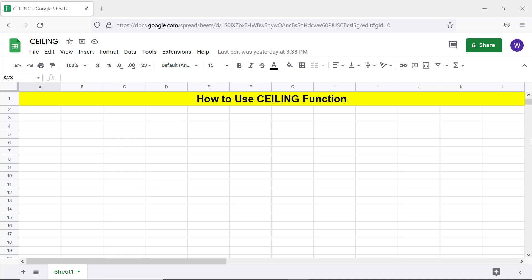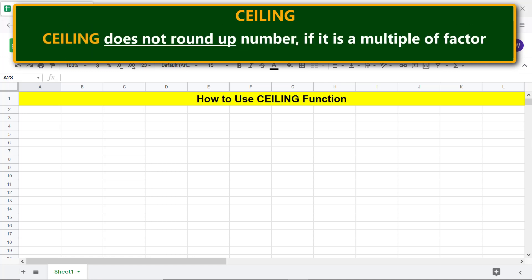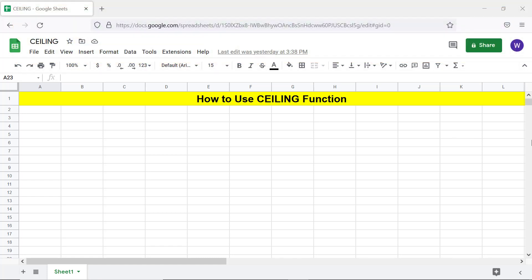Here's an intro to CEILING. CEILING rounds up a specified number to the nearest multiple of a specified factor. CEILING does not round up a number if it is already a multiple of the factor.